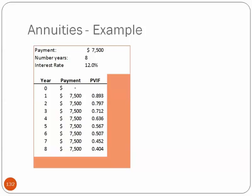That's 0.893. We then raise it to the second. One divided by 1.12 to the second. That's 0.797. And so on, all the way to the bottom.